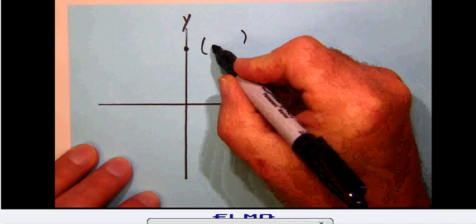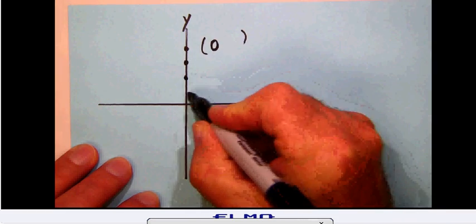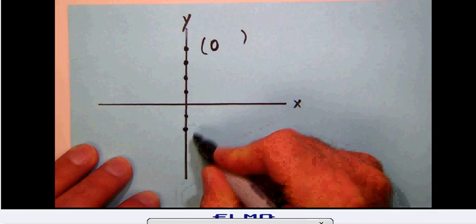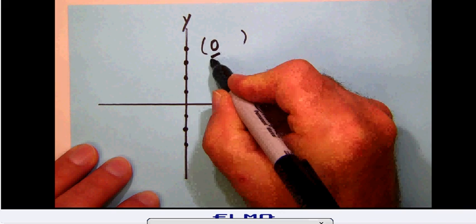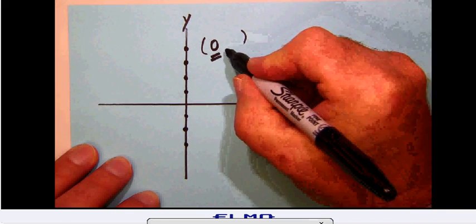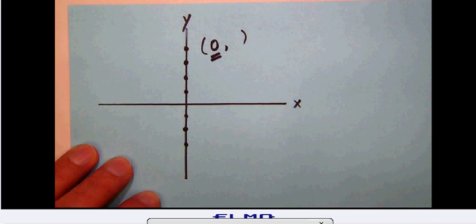Notice that since a y-intercept point is on the y-axis, we don't know just what that y value is depending on where it's located. But notice that in every case, the x-coordinate of a point on the y-axis must be zero.